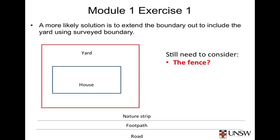A more likely solution is to extend the boundary out to include the yard, using the surveyed boundary — that is, the piece of land that is legally owned. Still, we have to consider a few issues. First, the fence line is shared with three neighbours, each having shared ownership of that portion of the fence. Most countries have standard legal arrangements for the fence between our system and our neighbours' systems, so we'd have to conform to those.